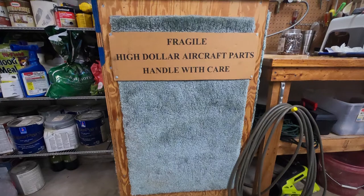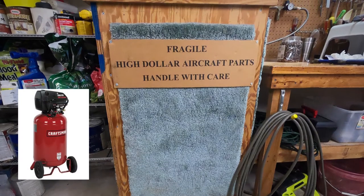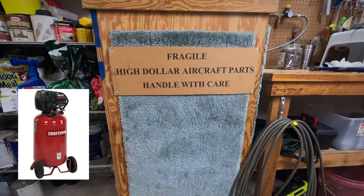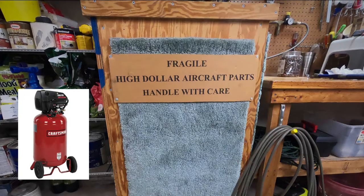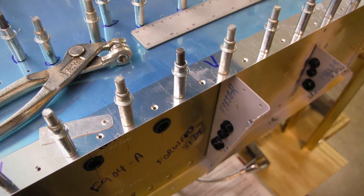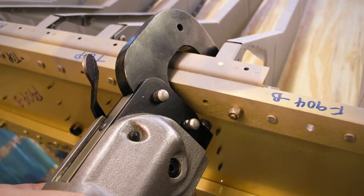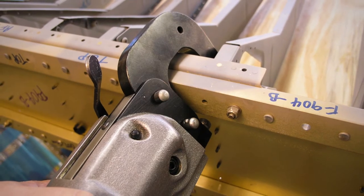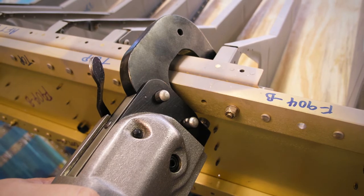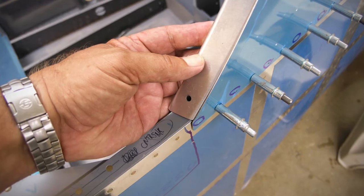This is a noise reduction box that we built for our 30 gallon non-oiled compressor from Craftsman. When we started building our RV from Vans Aircraft, the noise from the new compressor was so loud that the neighbors started to complain. We knew that we had to do something, so we came up with a design after searching on the internet.